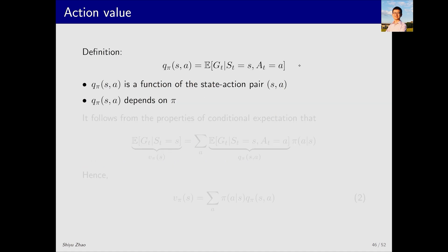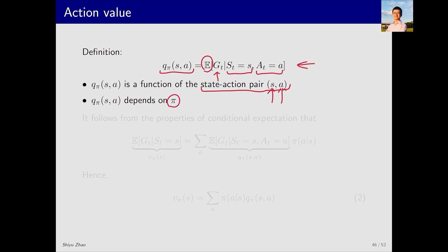The definition of action value is as follows: it represents the average return obtained after starting from a state s and taking an action a. This is denoted as q_pi(s, a). q_pi(s, a) is a function of a state-action pair, meaning it depends on the starting state and the action taken in that state. Additionally, the action value depends on the policy pi — different policies will yield different action values.